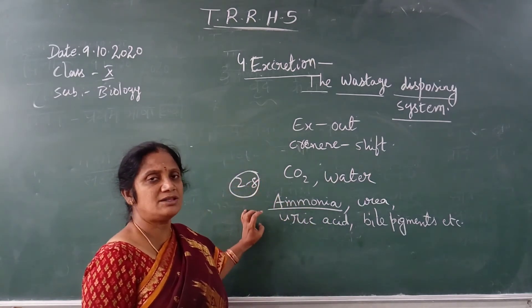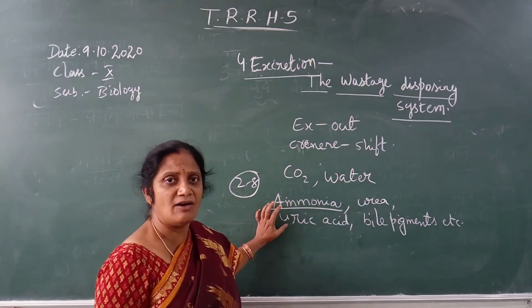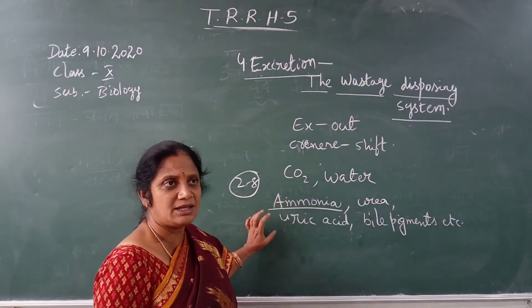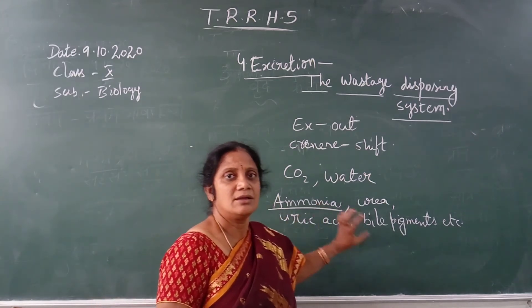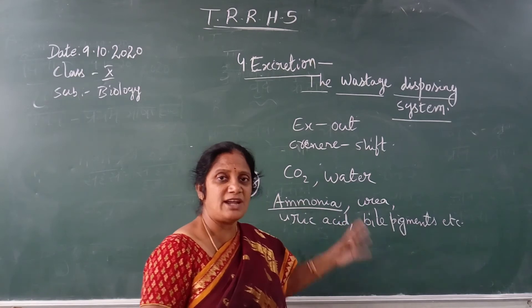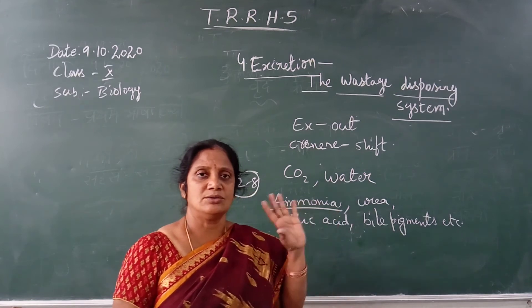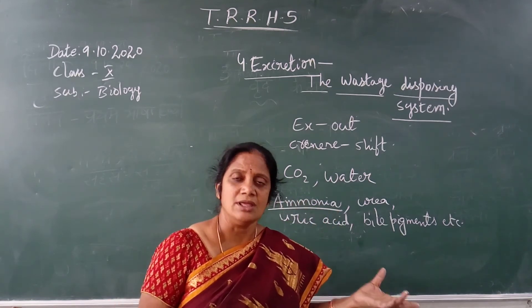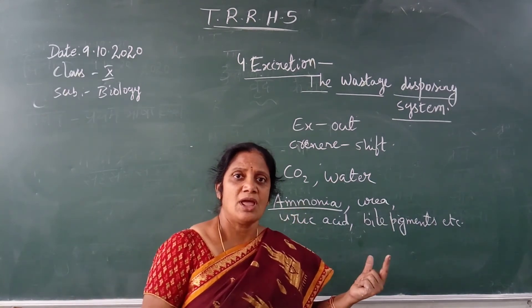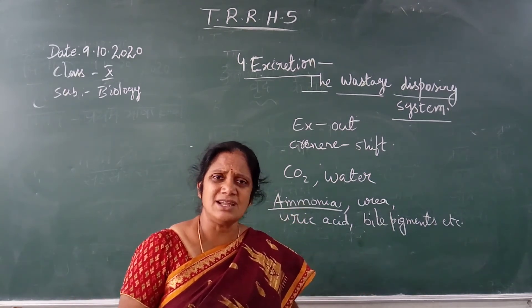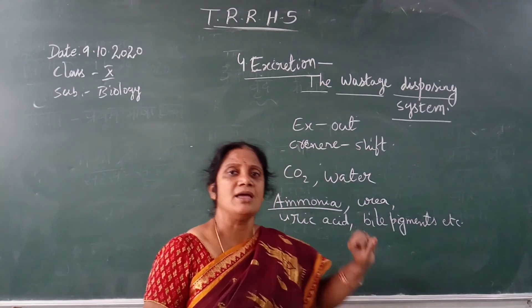From the heart, the blood goes to the kidneys through the renal artery. The renal artery carries the impure blood to the kidneys. In the kidneys, the blood is filtered and the waste materials are removed. There are many excretory organs — bile removes some waste, lungs remove some, skin also removes waste, and the large intestine as well. But mostly the nitrogenous waste are removed by the kidneys.